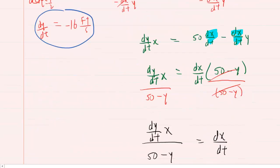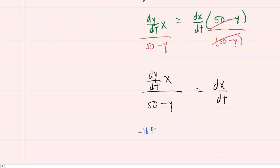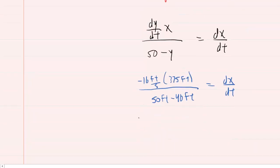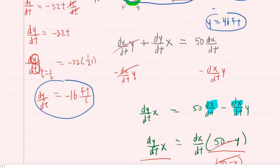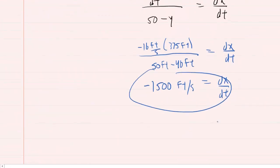Okay. We've got all the values we need. We'll come down here and plug them in. So again, dy/dt was negative 16 feet per second, multiplied by x, which was 375 feet, all divided by 50, and that's actually feet, minus the y, which was 46 feet. This will equal dx/dt. When you work this all out, perhaps on your calculator, you will indeed get negative 1,500 feet per second is equal to dx/dt. The fact that it's negative should make some sense because as the ball falls, this distance that we marked x is shrinking because the shadow is actually moving that way. And so as the distance of the shadow decreases, we would indeed have a negative rate.